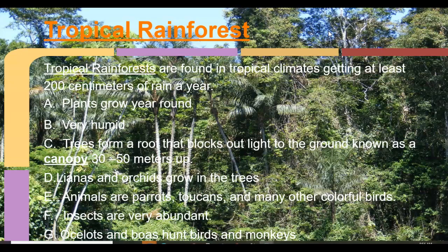Things like lianas, which are vines, and orchids grow in the trees and never really touch the ground. You have whole ecosystems living up in the trees versus on the ground — parrots, toucans, more insect species than anywhere else on earth, more frogs, lizards, and snakes than anywhere else. Ocelots are a predatory cat; boas and anacondas also live there.